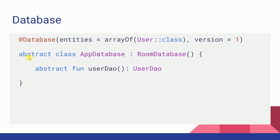The Database is an abstract class that extends RoomDatabase, and above this class you annotate it with the @Database annotation. Inside the annotation you define all the entities you have in your database and also define the version of your database. This version is used when you want to upgrade your database schema. The database class also has abstract functions to give us the DAOs — so we create functions to get all the DAOs here.